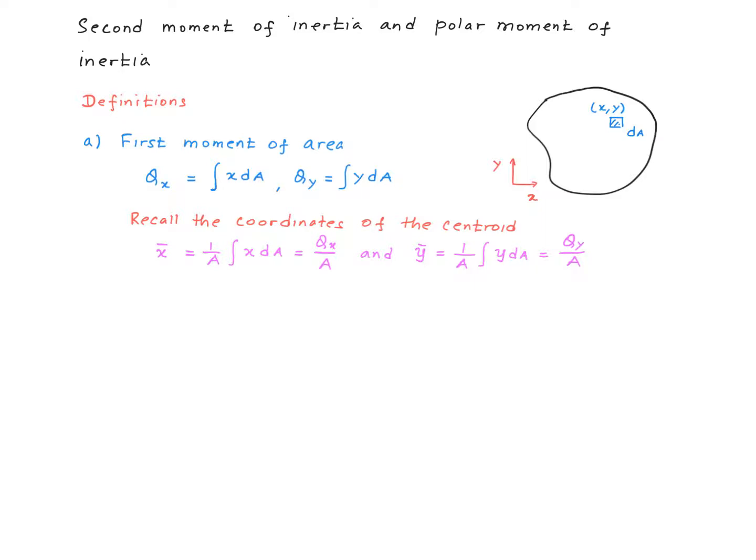Remember, x-bar equals 1 over A times the integral of x times dA over the area. But x times dA is really the first moment of area in the x direction, so that would be Qx over A. And similarly, y-bar is nothing but Qy over A.